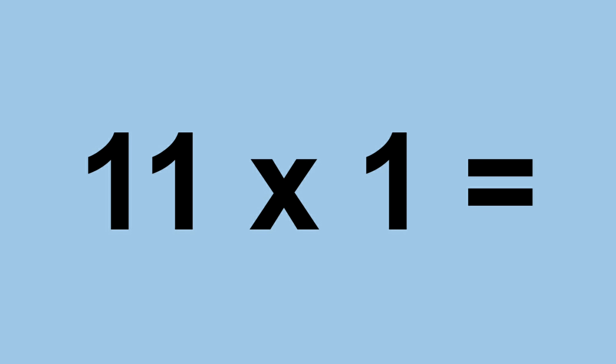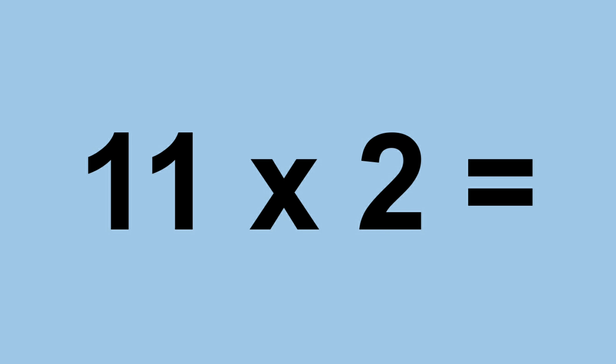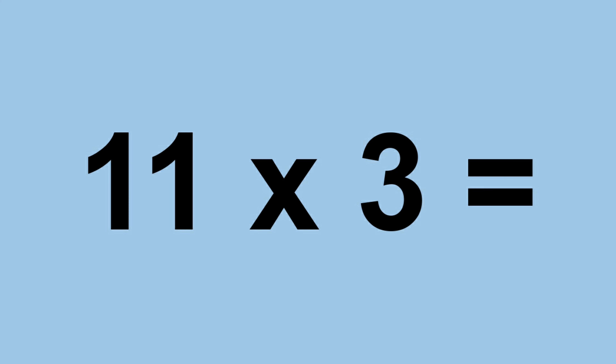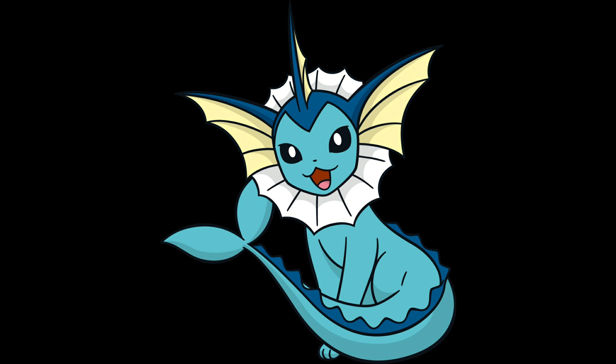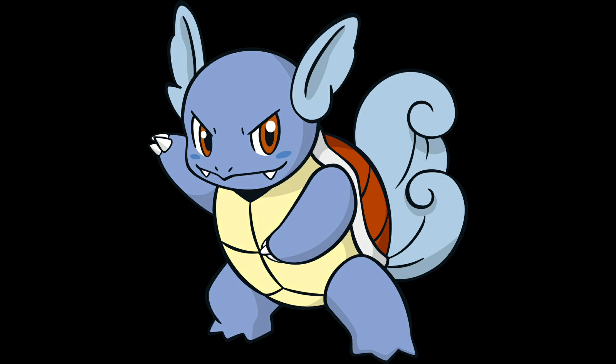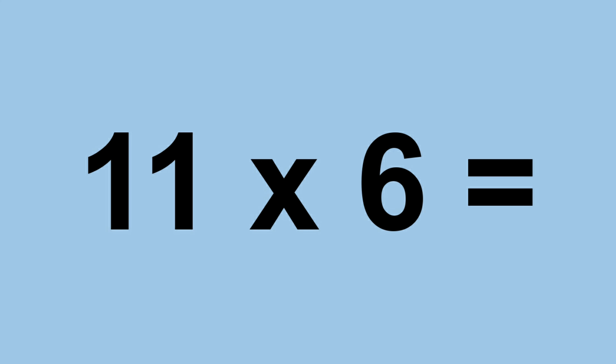Eleven times one equals eleven. Eleven times two equals twenty-two. Eleven times three equals thirty-three. Eleven times four equals forty-four. Eleven times five equals fifty-five. Eleven times six equals sixty-six.